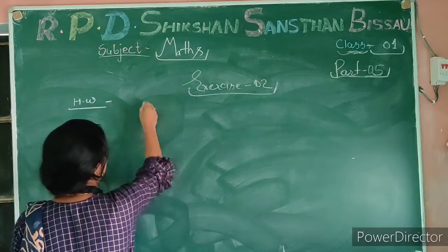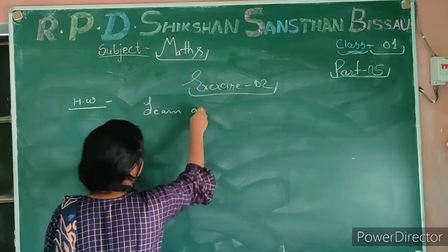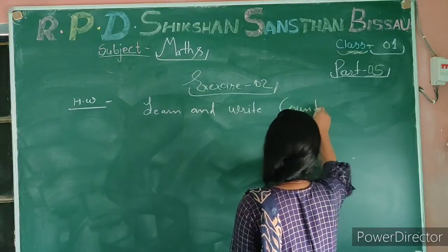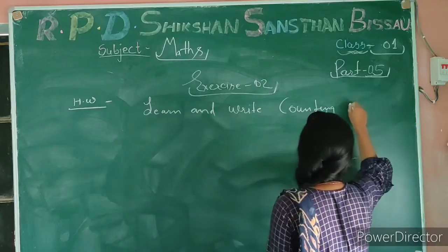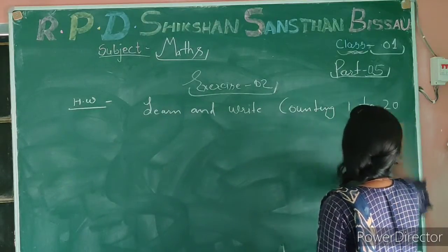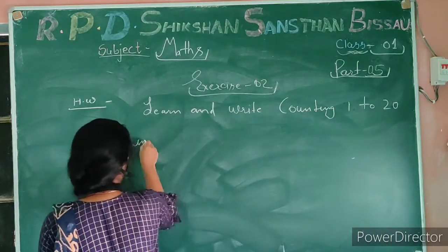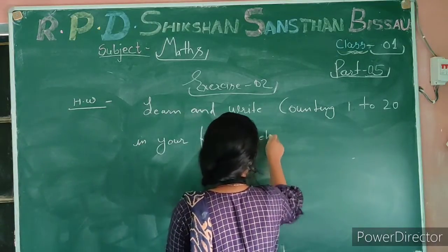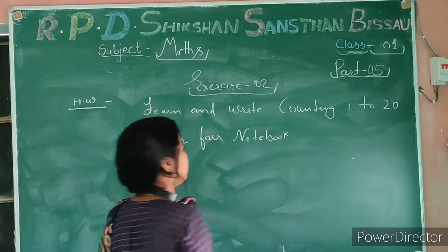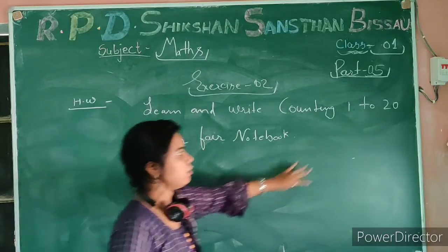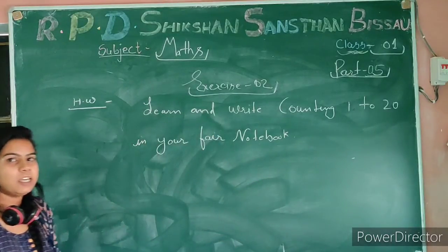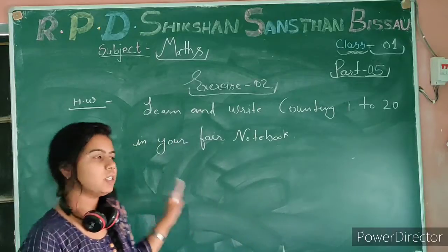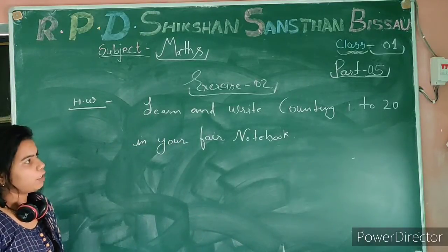Open your book and write. You can find 1 to 20 — in your fair notebook, okay students. Learn and write counting 1 to 20 in your fair notebook. First you will learn the counting and the spelling, then you will write in your fair notebook. Thank you.